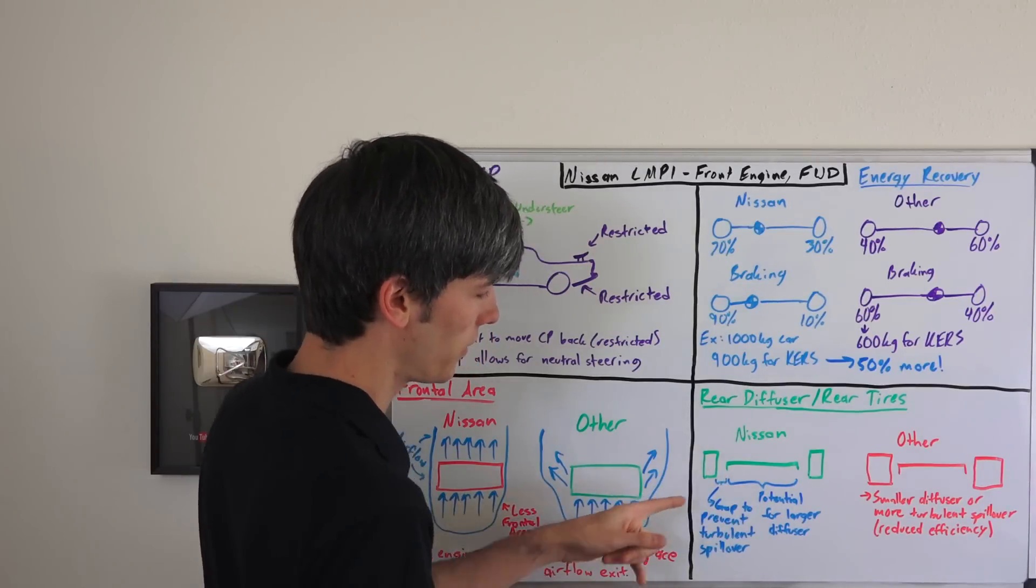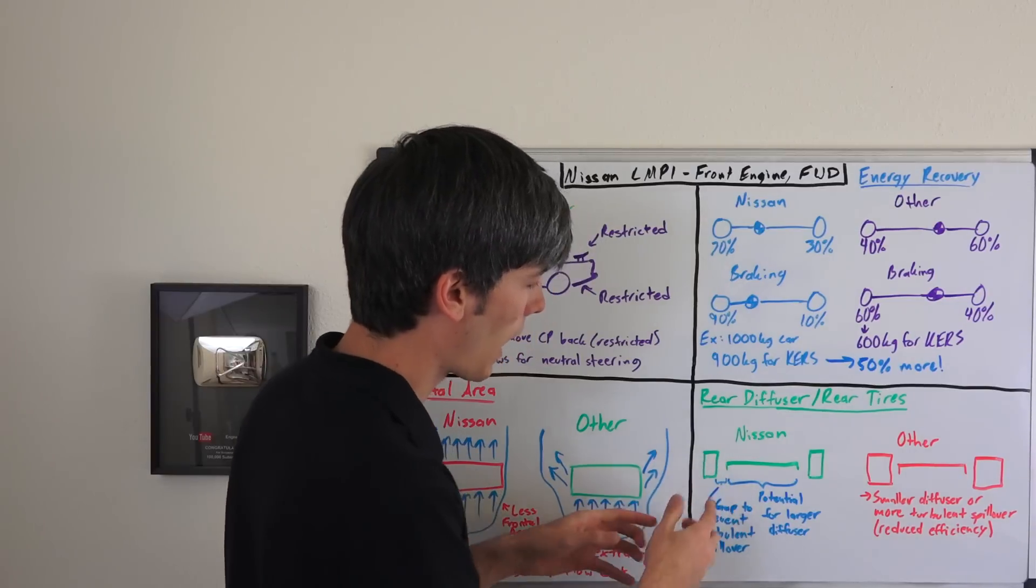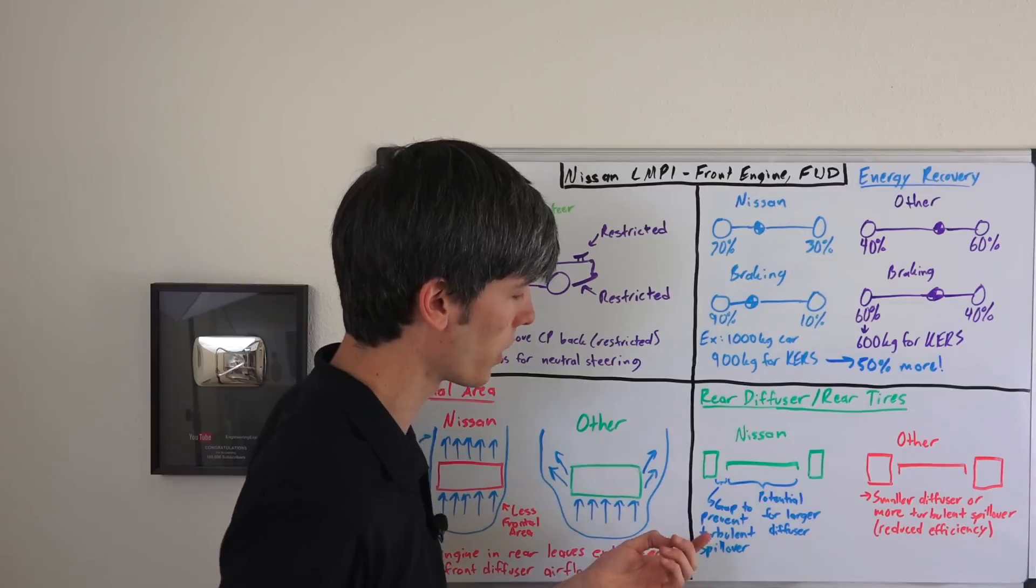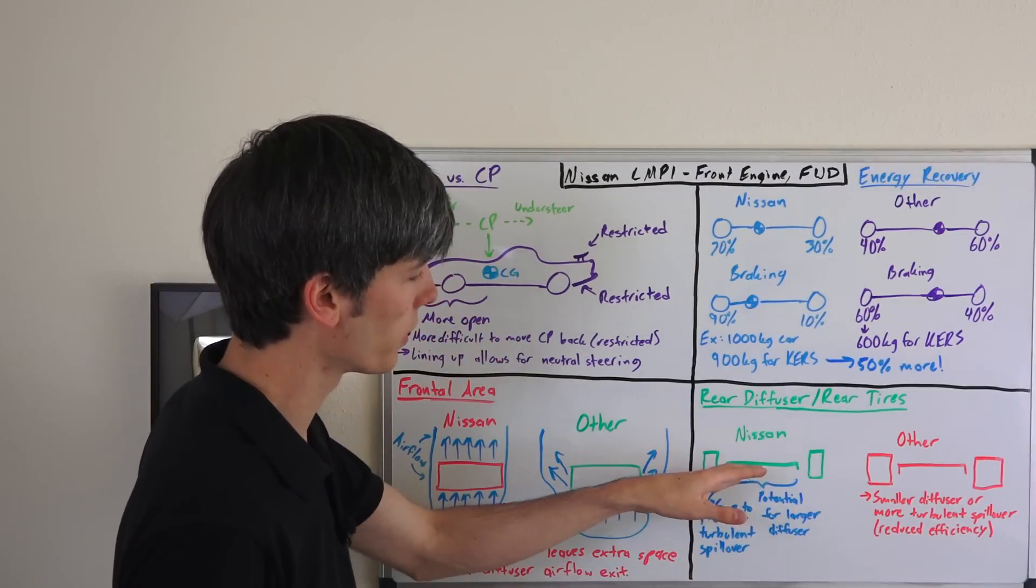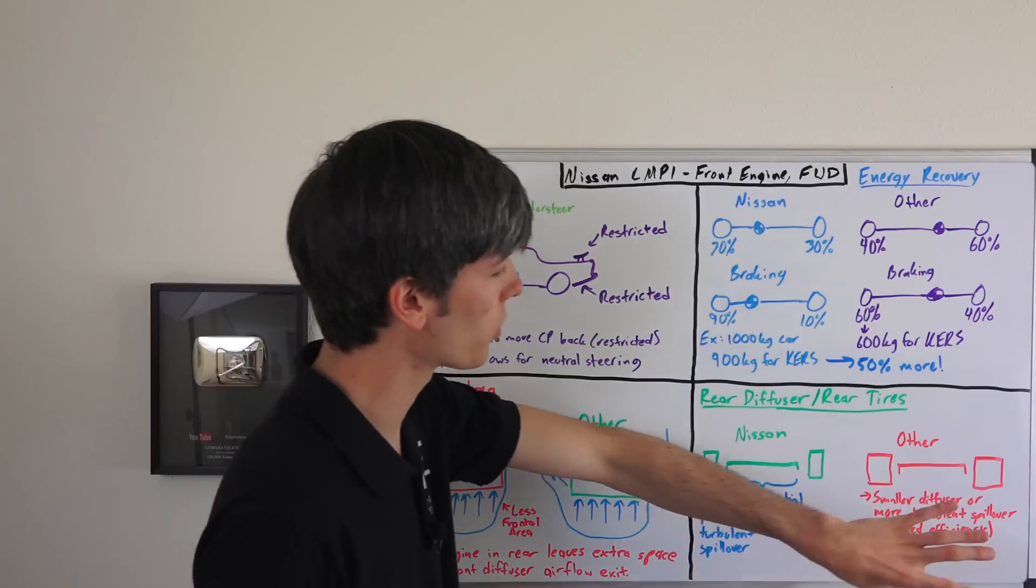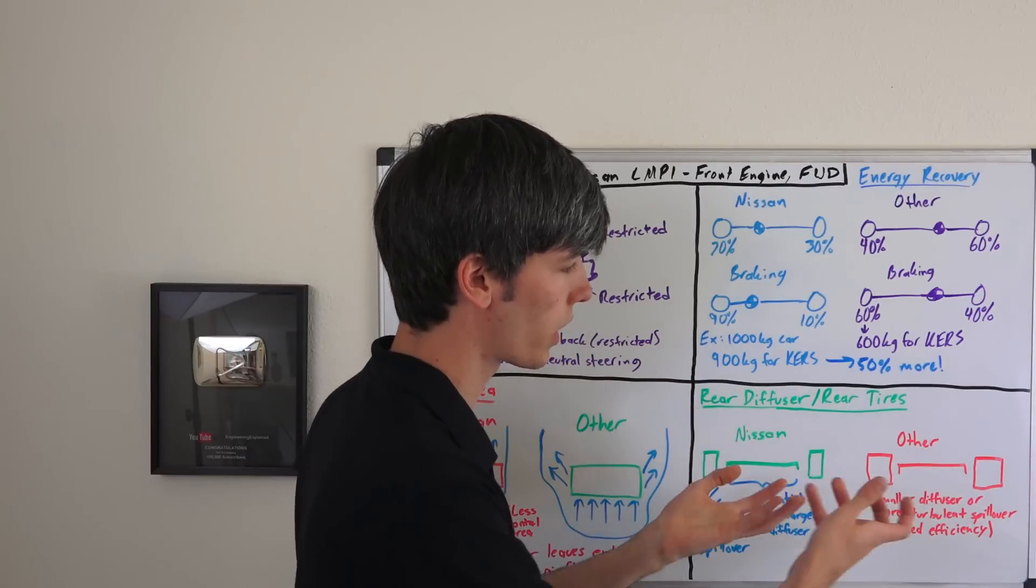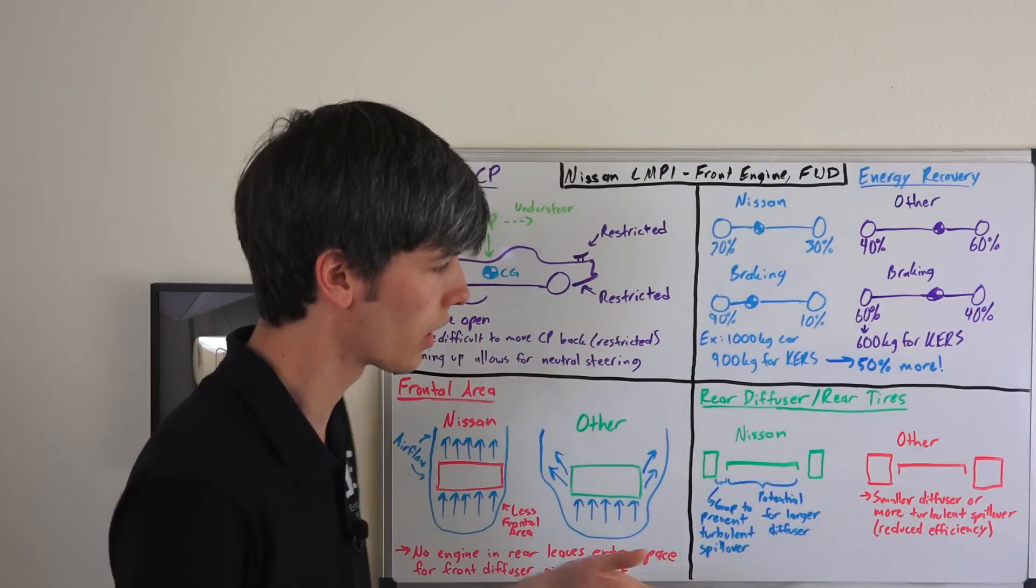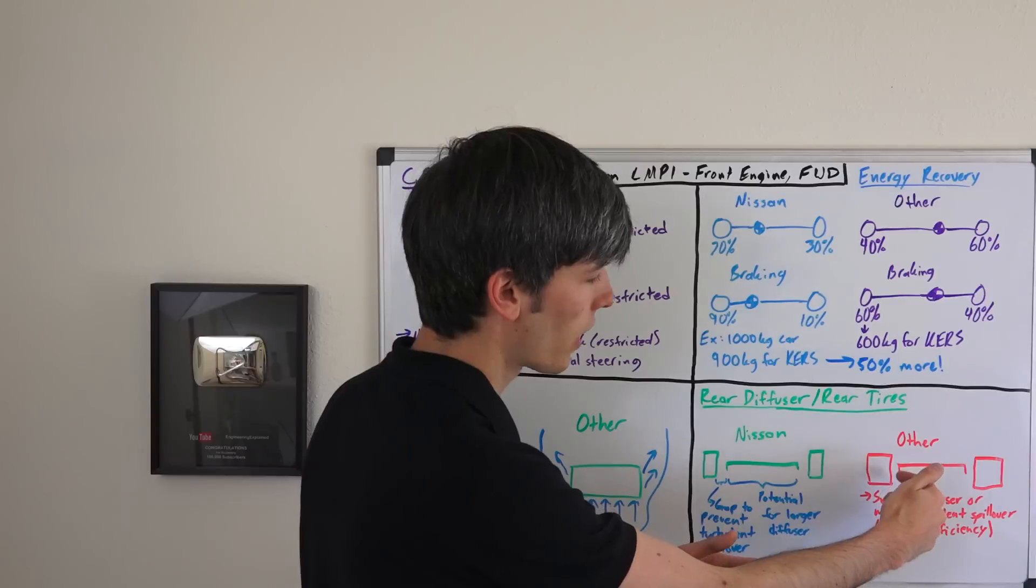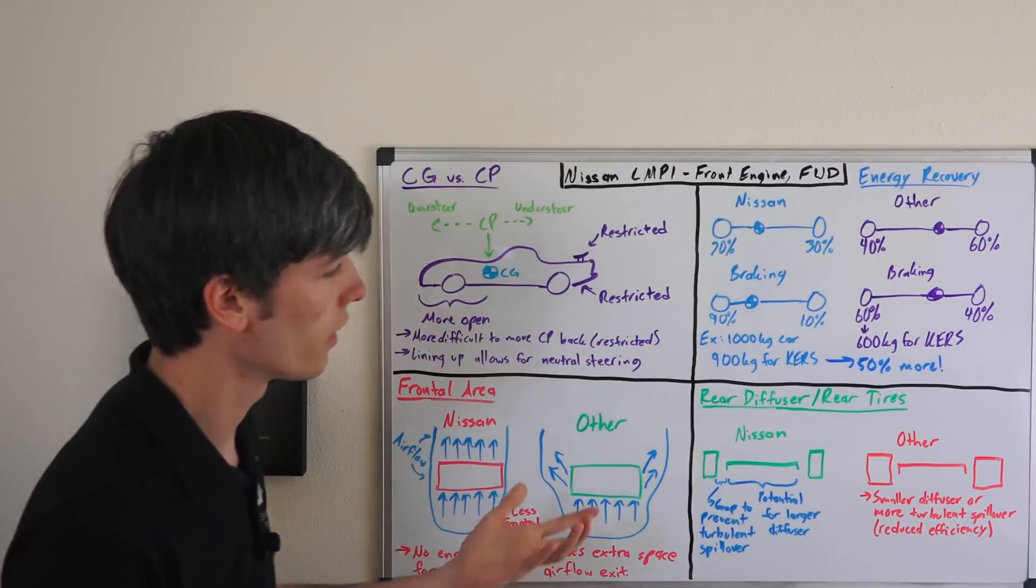The other thing this does is it gives them a gap, and they can manipulate this gap with aerodynamic features, so that they don't have spillover from these tires into the rear diffuser. So without that turbulent spillover, this diffuser is going to be much more efficient, whereas the other teams are going to have to choose between using a large diffuser with a lot of spillover, which is what they'll end up choosing, or a smaller diffuser, where they have spillover from these tires creating turbulent air, and decreasing the efficiency of the diffuser.